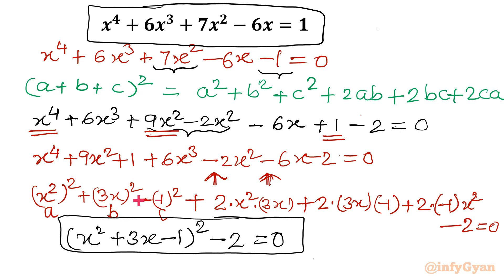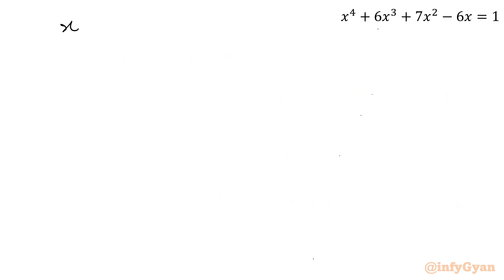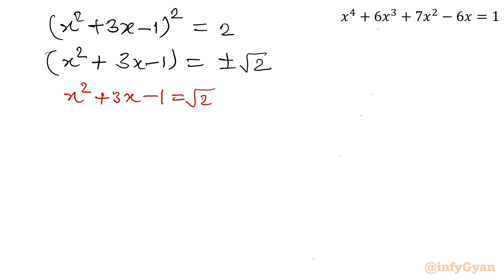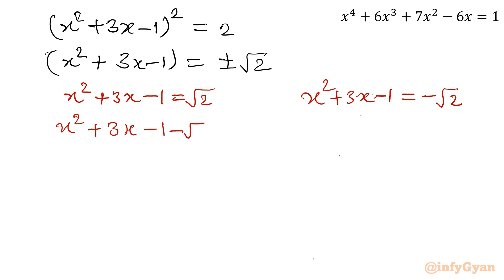Now let's solve it. We write (x² + 3x - 1)² = 2. Taking square root of both sides: x² + 3x - 1 = ±√2. Splitting into two quadratic equations: first, x² + 3x - 1 - √2 = 0, and second, x² + 3x - 1 + √2 = 0.